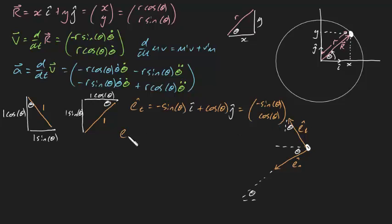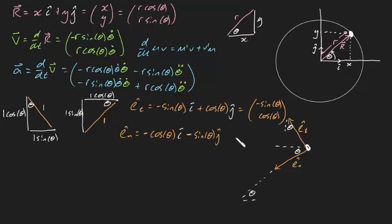Now let's do the same thing for en. This right here is en — notice it goes down. To get there, we need to go left by one cosine theta and down by one sine theta, so this is going to be minus cosine theta i minus sine theta j, and we can rewrite that as the vector (minus cosine theta, minus sine theta). Fantastic.